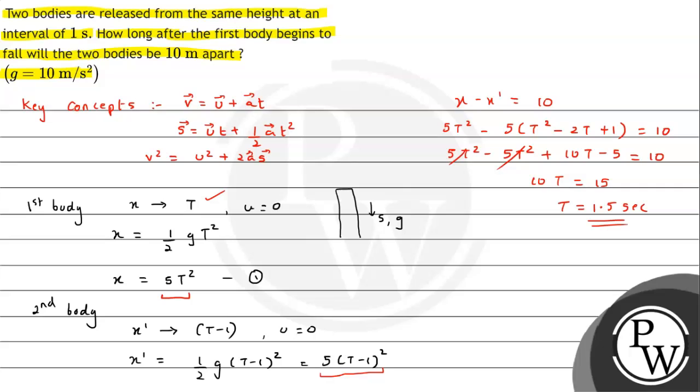The difference between the two, the displacement or the distance between the two should be 10 meters at what time - that's what we are interested in calculating. So after 1.5 seconds the two bodies will be 10 meters apart. This is the answer to the question. I hope you understood the solution. All the best.